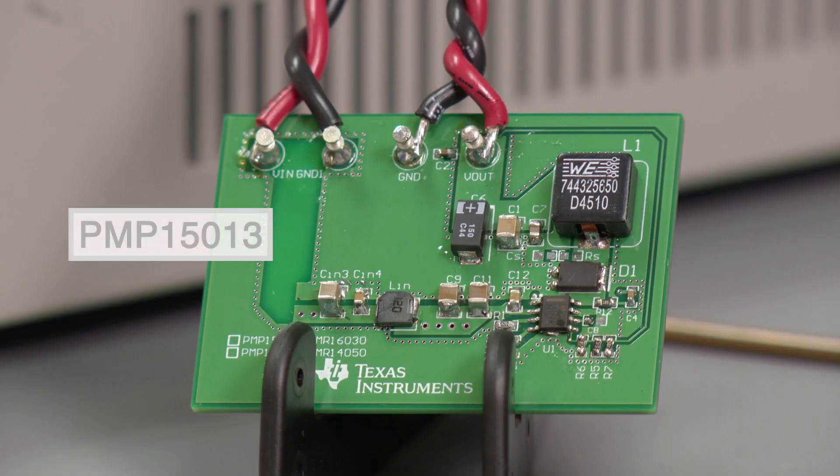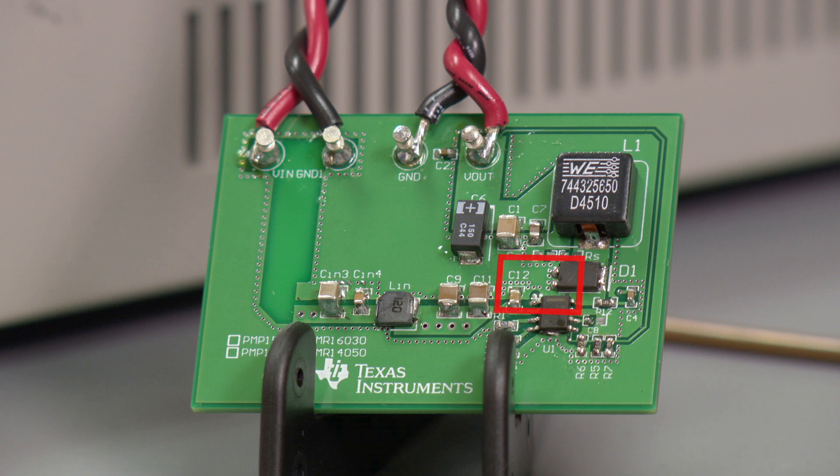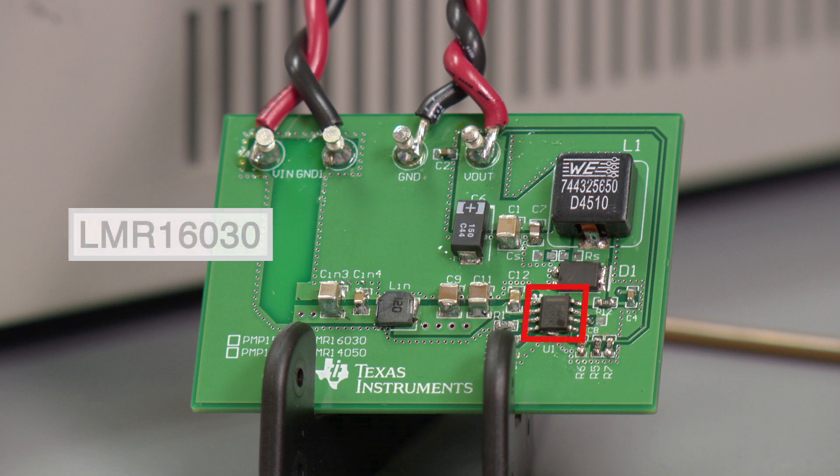So we have an example to show you here today. We have an evaluation board that was designed by TI engineers specifically to minimize both conducted and radiated EMI. Essentially, the board has a very tight loop area as we mentioned, it has both top side and bottom side ground planes, and it has both differential and common mode input filters. This particular board is based on the LMR 16030 simple switcher non-synchronous buck converter. So this is what we'll use as our example today in our lab to see what kind of EMI performance we can get.